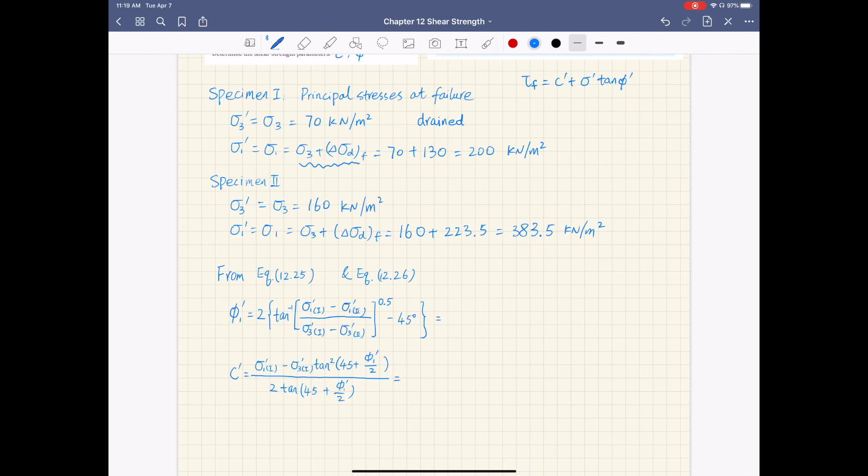The details of this derivation are given to you in the textbook. And the equations we're going to use are equation 12.25 and equation 12.26, which gives you the shear friction angle phi 1 prime and the cohesion term C'. So notice here...